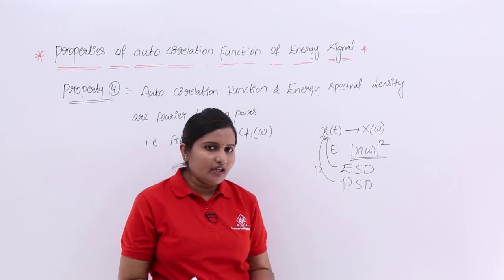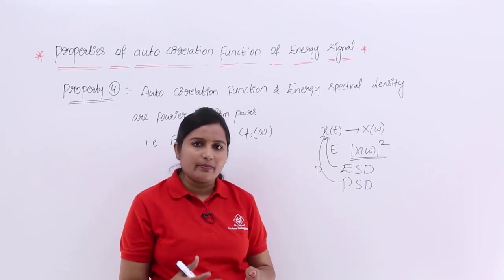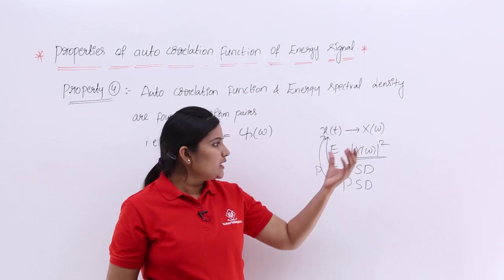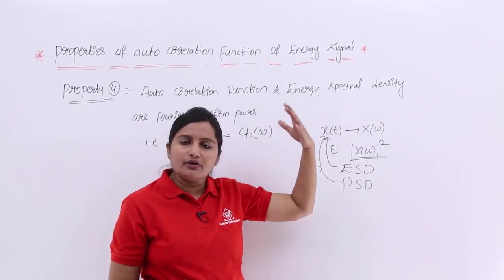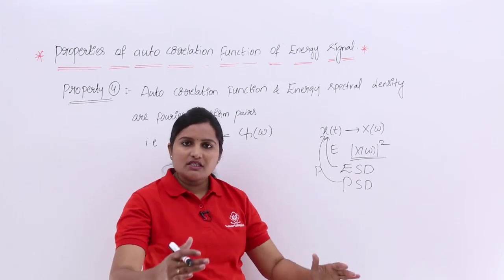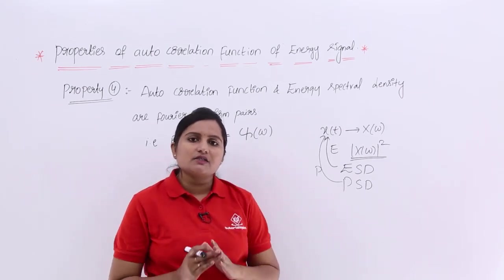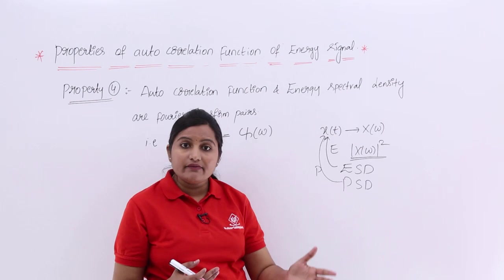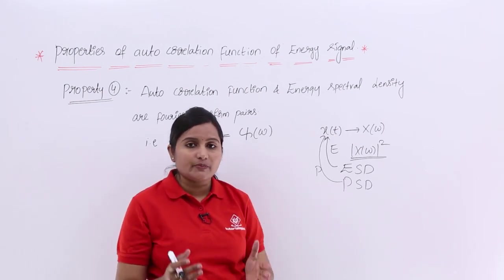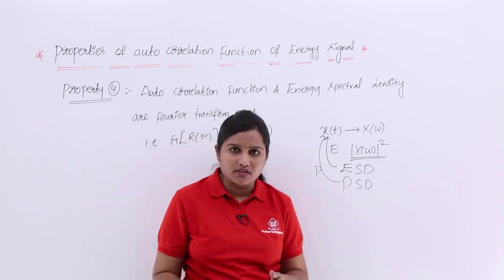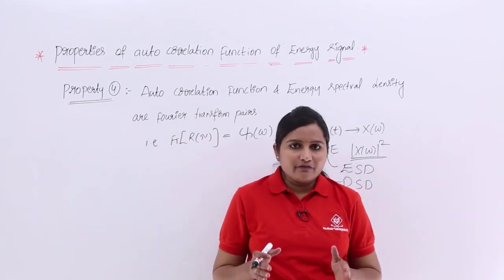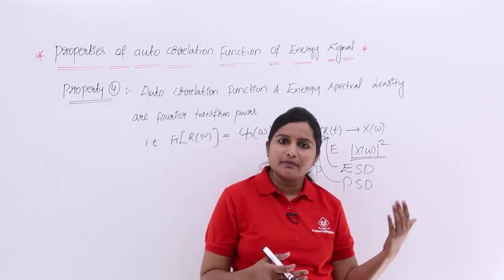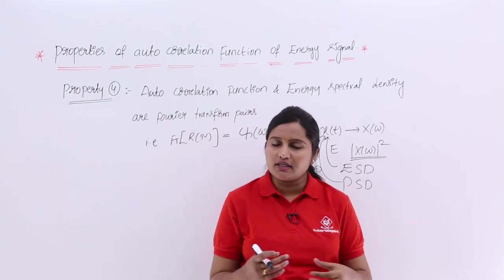For any signal, we can calculate spectral density, because if the signal is Fourier transformable or Laplace transformable, you can find its spectrum and square it to get spectral density. When the signal is an energy signal, that spectral density is called energy spectral density. When it is a power signal, it is called power spectral density. That is the only difference.